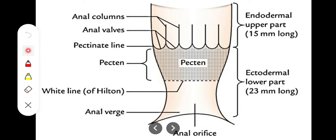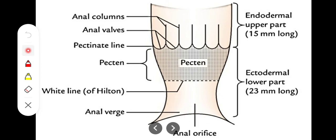The second part is the pecten part or transitional zone, which does not contain any anal columns or anal valves. The lower boundary of this part is marked by the white line of Hilton, which is whitish or bluish in color, and marks the level of the subcutaneous part of the external anal sphincter. This middle region is devoid of sweat glands. It has a bluish appearance due to the presence of venous plexuses, and if there is a hemorrhoid in this region, it results in internal hemorrhoids.